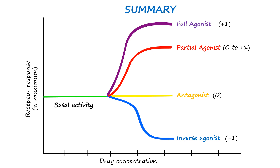Partial agonists have an efficacy lying between zero and plus one — they activate the receptor but not to its full potential. Similarly, on the opposite end of the spectrum, we can also have partial inverse agonists with an efficacy lying between zero and negative one.